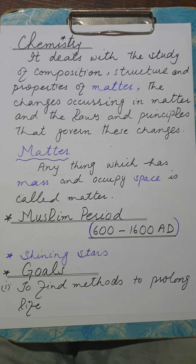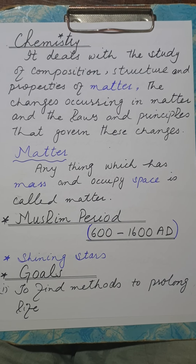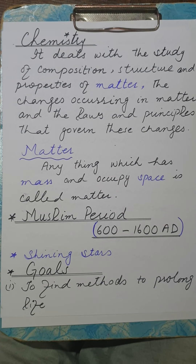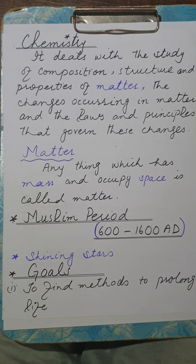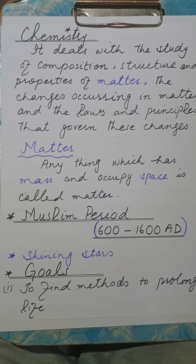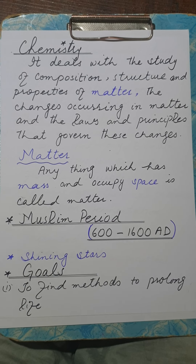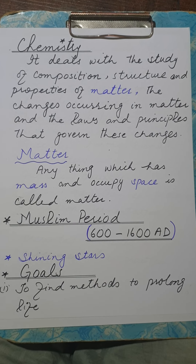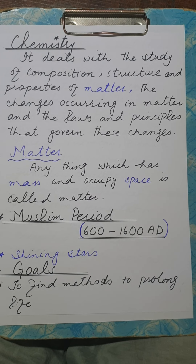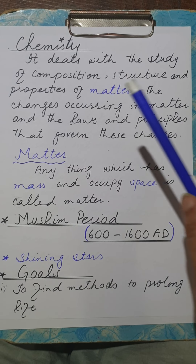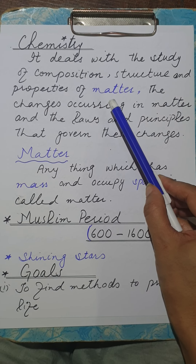Matter has two types of properties: physical properties and chemical properties. Chemical properties are those properties which cannot be observed with the help of the five senses. These are actually the chemical reactions which are taking place, and chemical reactions cannot be observed with the help of the eyes. So the chemical properties of substances are totally different from the physical properties.